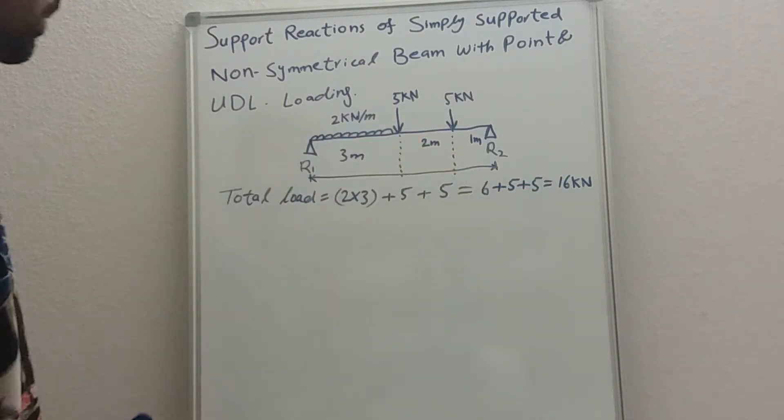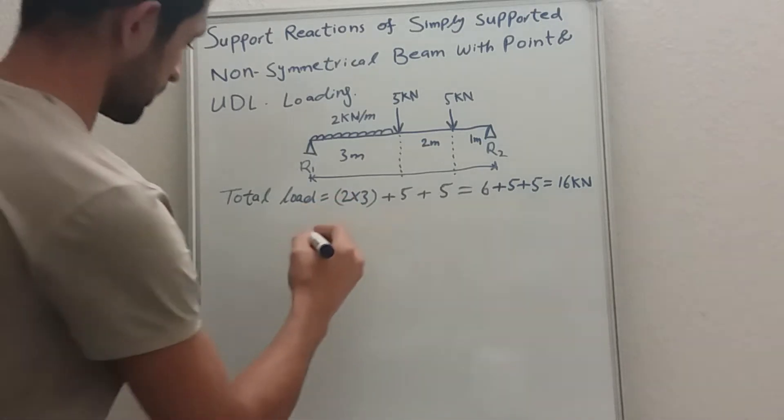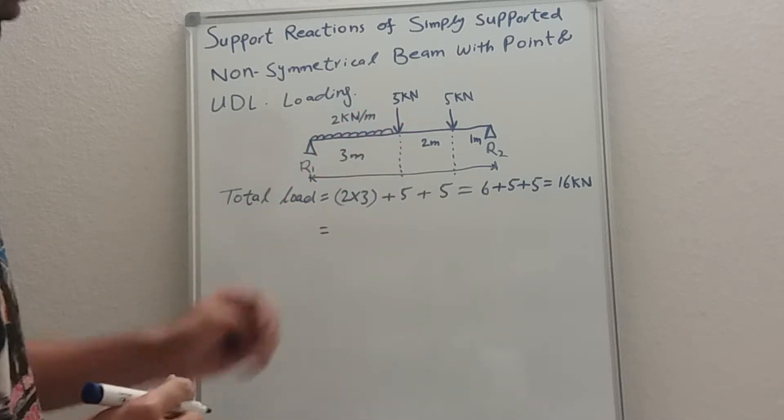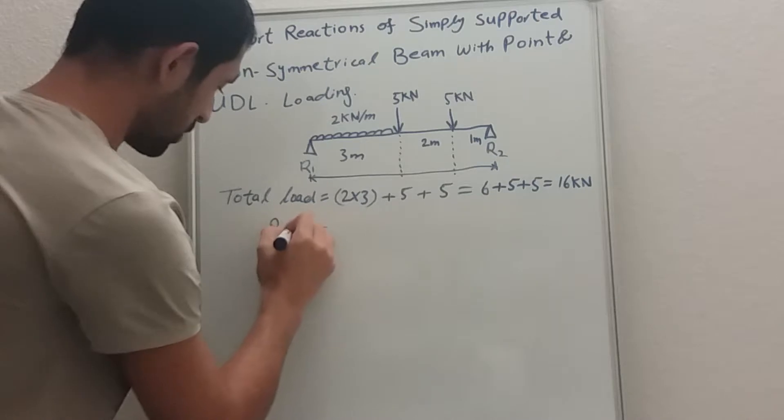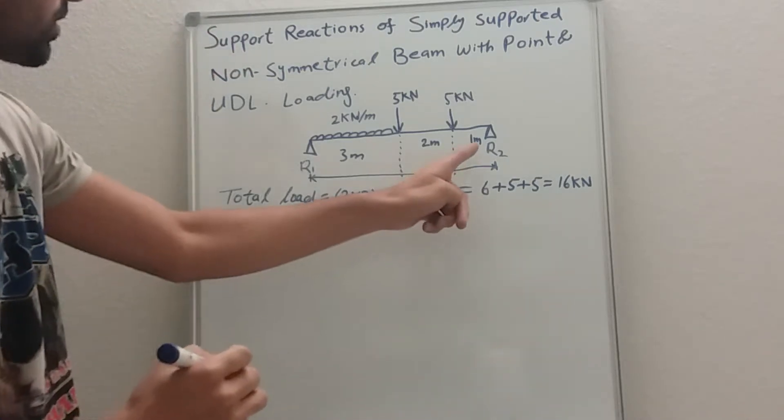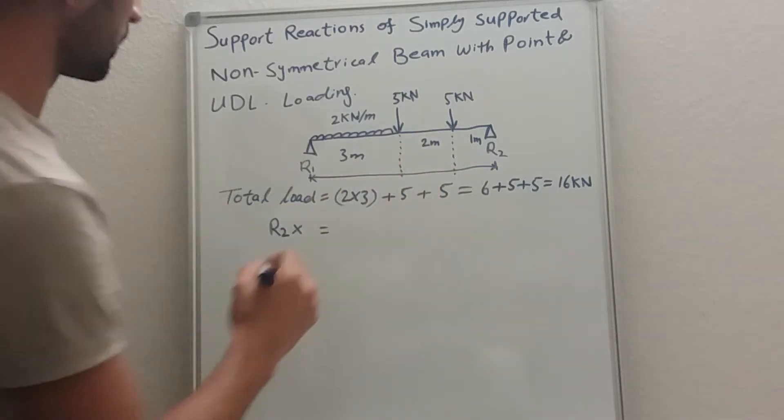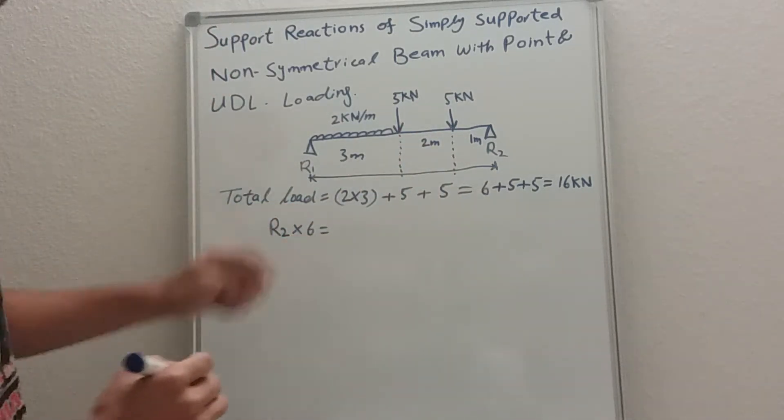Now we need to calculate the reactions, how much R1 is resisting and how much load R2 is resisting. So start with R2: R2 times by the distance, two plus one is three, three plus three is six. So it's R2 times by six.